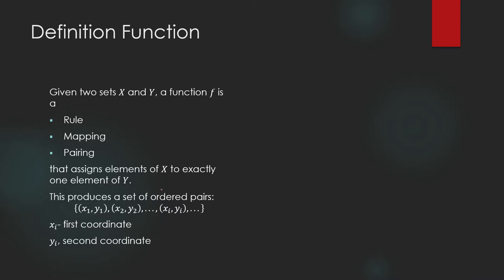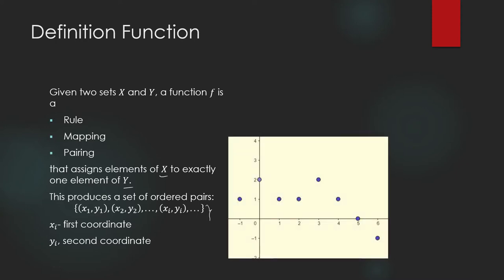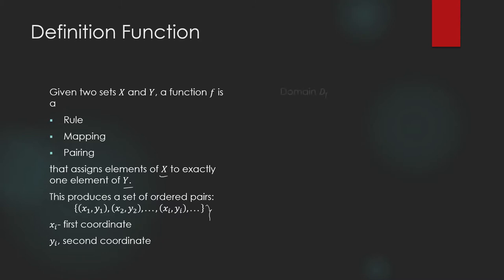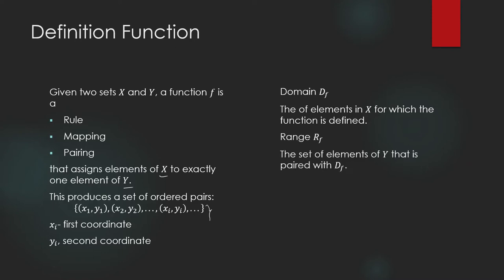And if our sets x and y are sets of real numbers, then these ordered pairs are going to be the coordinates of a point. We can plot them in our rectangular coordinate system, and that set of points is what you call the graph of your function. A function gives way to two more sets: the domain of the function, which are the elements in x for which the function is defined, and the range, which is the resulting elements in y paired with the elements in the domain.